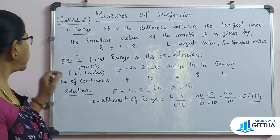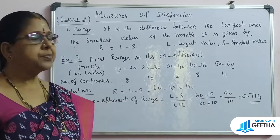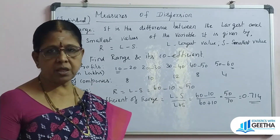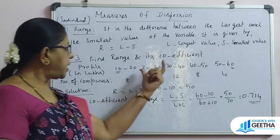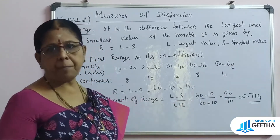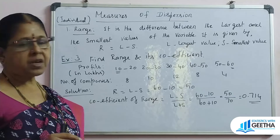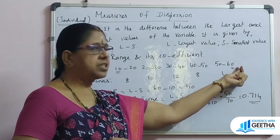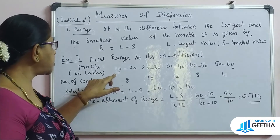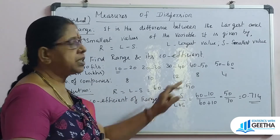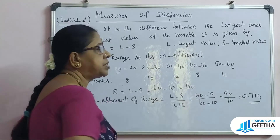For a continuous series problem: find range and its coefficient, given profits in lakhs as class intervals with corresponding number of companies as frequency. For continuous series with class intervals, the largest item is the upper limit of the last class interval, and the smallest item is the lower limit of the first class interval. So the largest item L is 60 and the smallest item S is 10. R = 60 minus 10 = 50. Coefficient of range = (60 minus 10) divided by (60 plus 10) = 50 by 70 = 0.714.